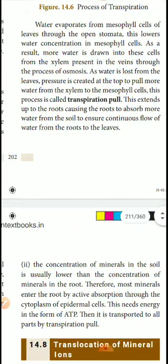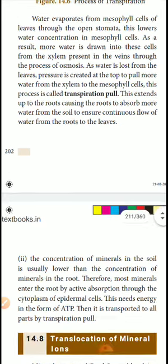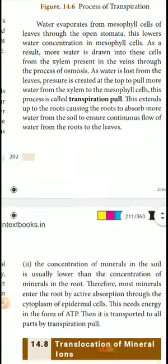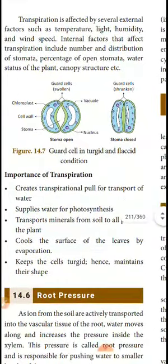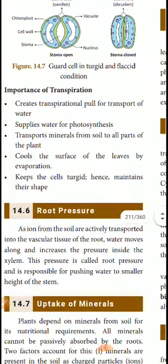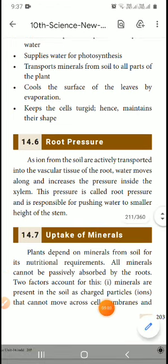Next, a two-mark question: transpiration pull. For the public examination, read not only book back questions but also inside questions — note them down and be thorough, it will be helpful for the exam. Transpiration pull extends up to the root, causing the roots to absorb more water to ensure the continuous flow of water from the root to the leaves. Transpiration is affected by several external factors and the percentage of open stomata and water status. Importance of transpiration — note it down, it is a four-mark question: creates the transpiration pull, transports water from the soil to all parts of the plant, pulls the surface of the leaves by evaporation, and keeps the cells turgid and maintains their shape. Next class we can see more. Thank you students.